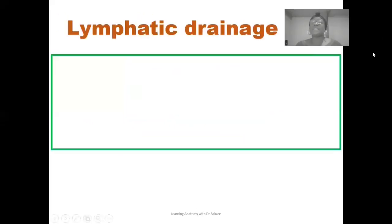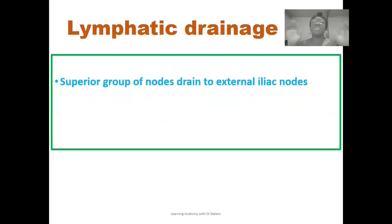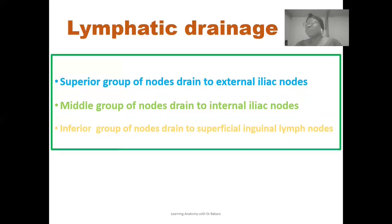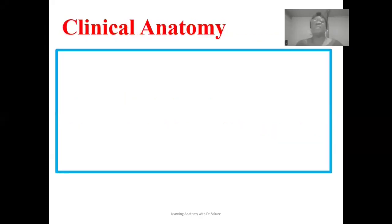For the lymphatic drainage: the superior region of the vagina canal drains into the external iliac lymph nodes. The middle region also drains into the external iliac lymph nodes. The inferior region drains into the superficial inguinal lymph nodes, which are located below the inguinal ligament at the superficial region.